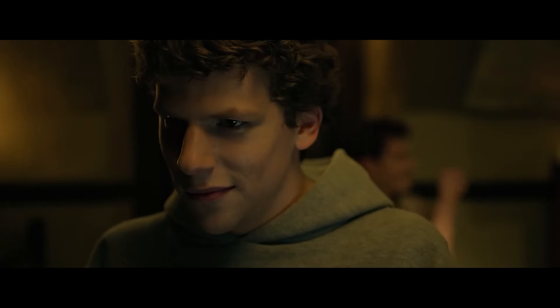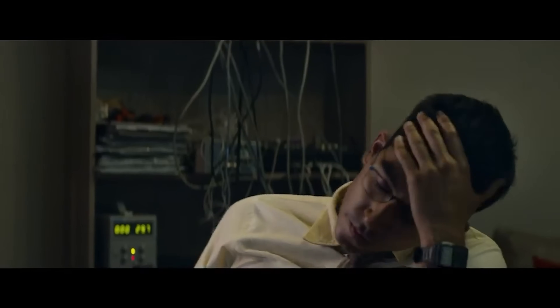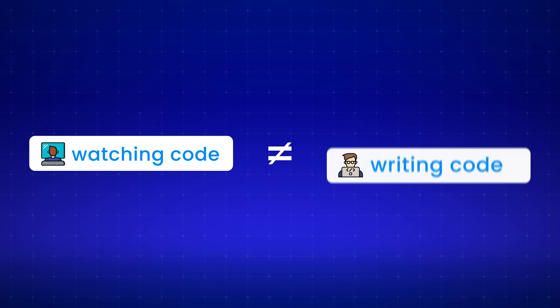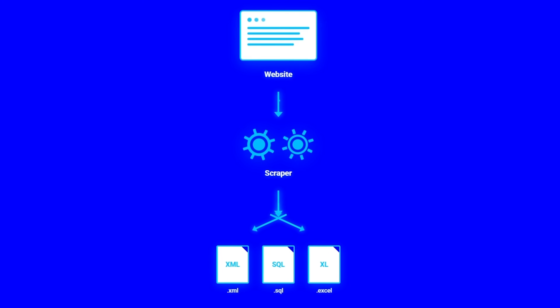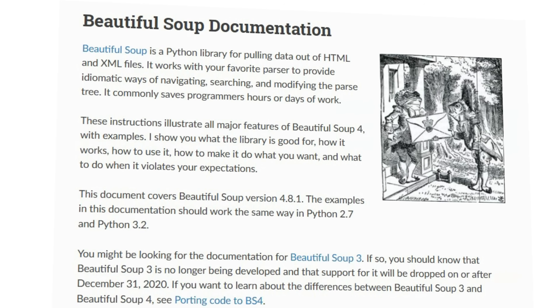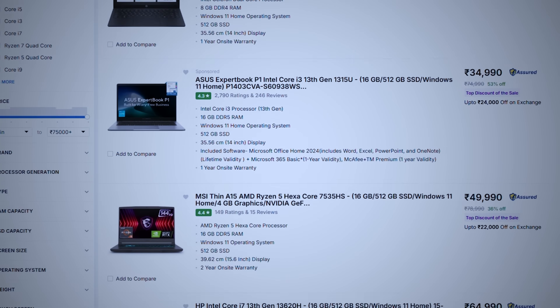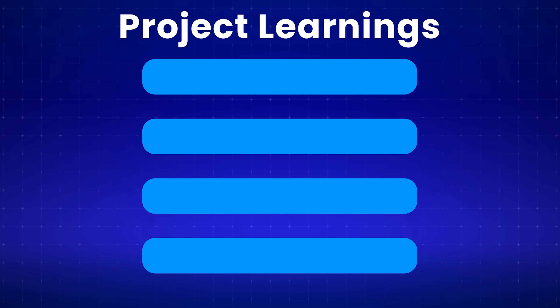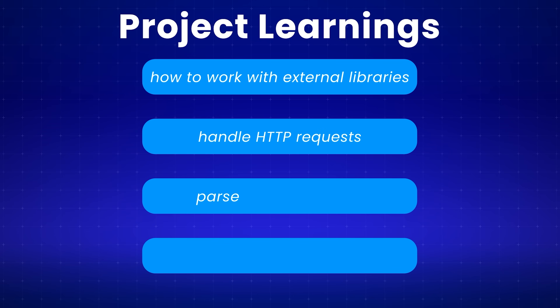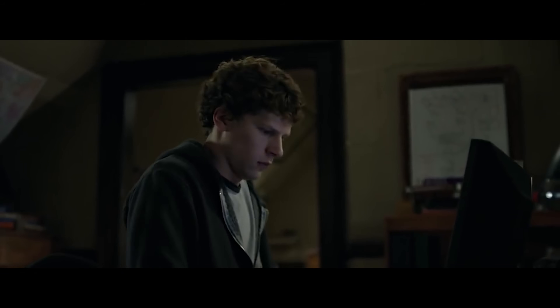But none of this matters if you don't build projects. You can watch all the tutorials in the world and still not be able to code — watching code is not the same as writing code. So here are three projects that will actually make you a strong Python programmer. For your first project, build a web scraper that extracts data from a real website. Use the requests library to fetch web pages and Beautiful Soup to parse HTML. Scrape something interesting like job postings or product prices. Store the data in a CSV file using Python's CSV module. This teaches you external libraries, HTTP requests, and parsing structured data — and more importantly, you will learn how to debug when things break.